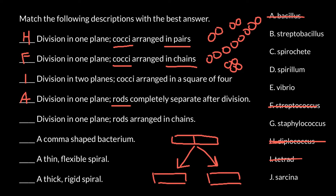Next: division in one plane, rods arranged in chains. We have rods arranged in chains. This is going to be bacillus and would also have 'strepto' in its name. So: streptobacillus. And this is answer B.